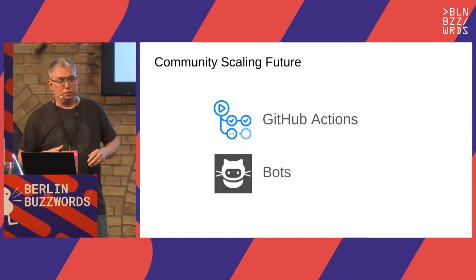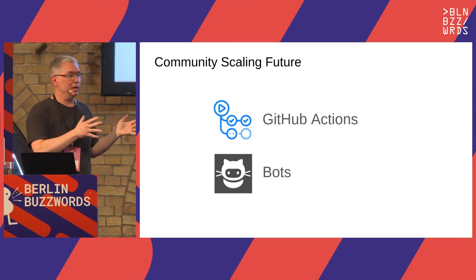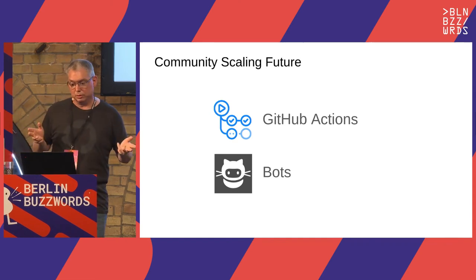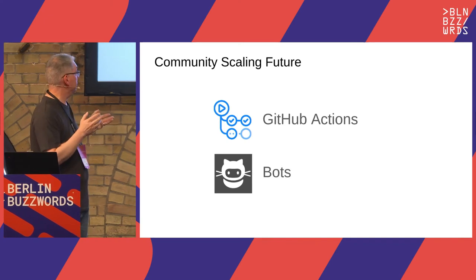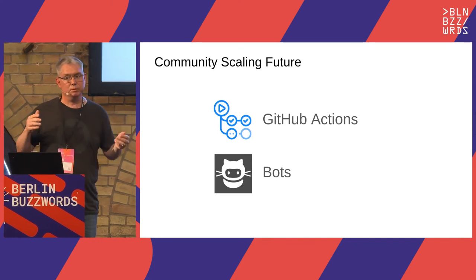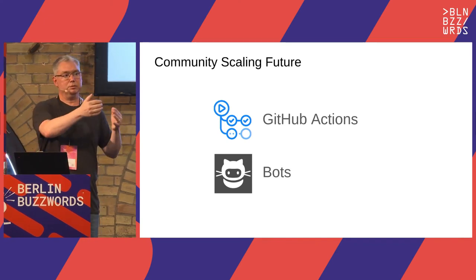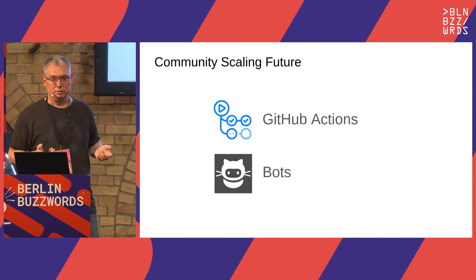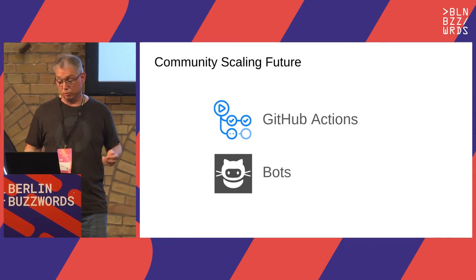In the future, we want to build on this base and actually write automation on top of these issue templates — using things like GitHub Actions and bots that can detect these issues and automatically do certain tasks, so we reduce the human interaction even further.